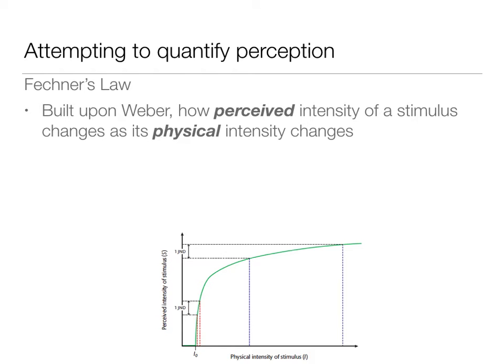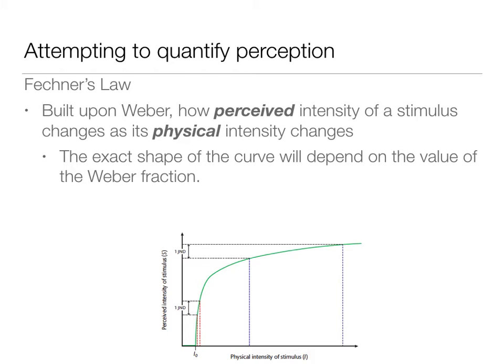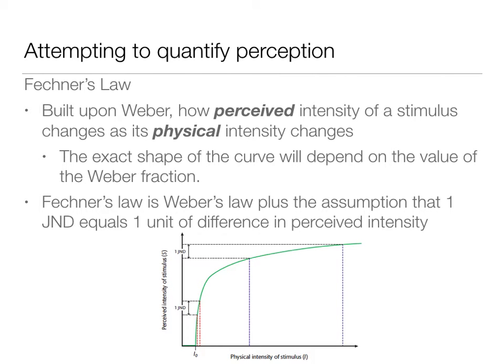He's using a mathematical equation, and he built upon Weber's Law and added information to it. The exact shape of the curve that you get depends on that Weber's fraction, because it is built upon that. Depending on the mode of perception and the perceptual dimension we're looking at, Fechner says that how you perceive changes in intensity will be different. Here's an example of one of the curves from Fechner's Law. Fechner's Law is Weber's Law plus the assumption that one just noticeable difference equals one unit of difference in perceived intensity.